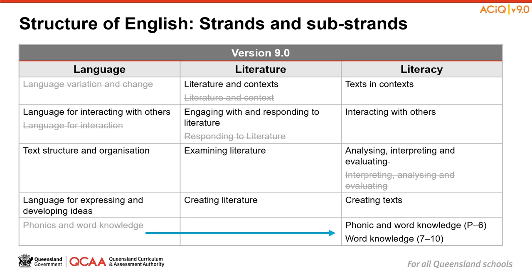In black text are the Version 9 names of strands and sub-strands. In grey, and with the strikethrough, are the names and location of Australian Curriculum Version 8.4. Specifically, some changes include: the content from Language Variation and Change is no longer a sub-strand and has been redistributed; Phonics and Word Knowledge has been moved to the Literacy strand; and in Literature, Responding to Literature has been refined to strengthen the relationship between engagement with literature and responding to literature.